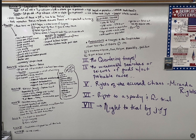The fifth article is how to pass an amendment. You need two-thirds of Congress and three-fourths of states. It's very difficult to pass an amendment because we don't want to just continually change the Constitution all the time. So again: two-thirds of Congress, three-fourths of states.